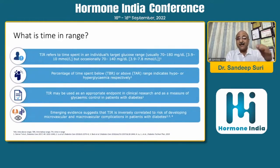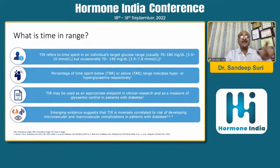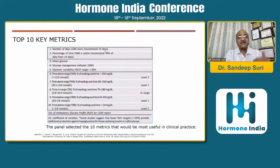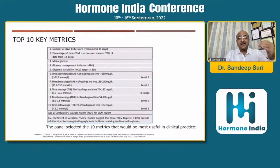Time in range refers to how much time you spend within the target range out of 24 hours. The standard target range is 70 to 180 mg/dL. In 2019, the ATTD guidelines simplified and made glycemic variability presentation more practical, actionable, and interactive, giving 10 key metrics: number of CGM days worn (at least 14 days), percentage of time CGM is active (at least 70% of data from 14 days), mean glucose, glucose management indicator, glycemic variability as coefficient of variation less than 36%, time above range, and time below range.